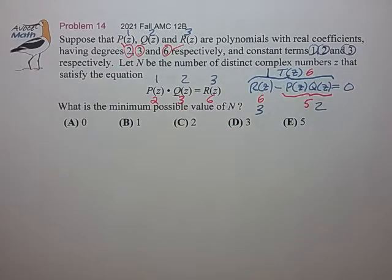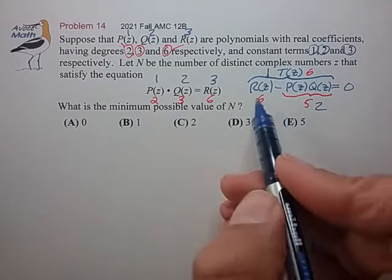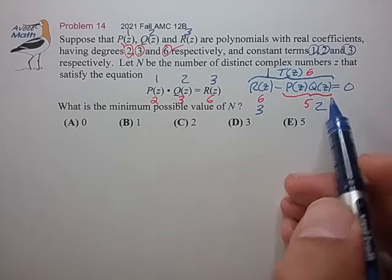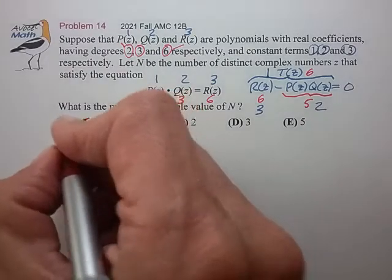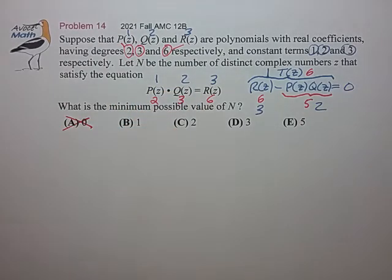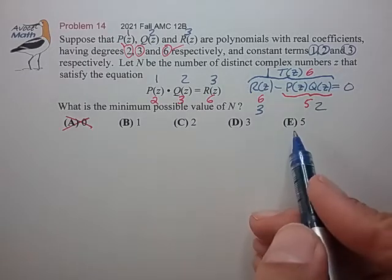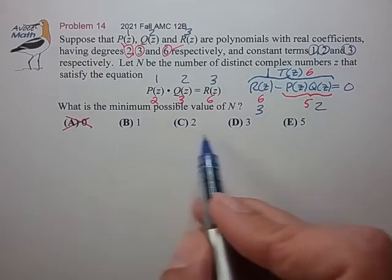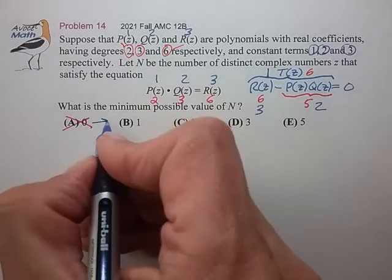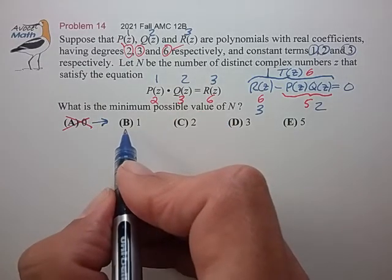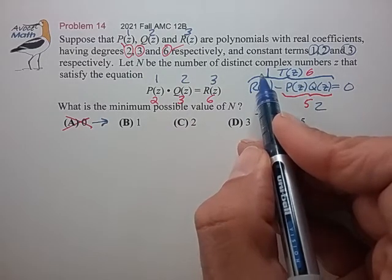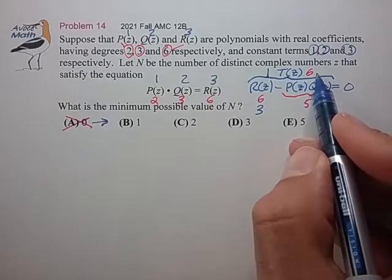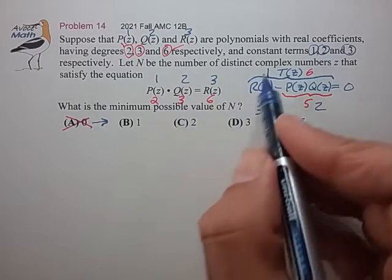All right, so we're going to try to figure out what's the minimum number of distinct complex numbers that satisfy this equation. Now, since this is a six-order equation, I know that it has to have at least one root. So I know that A can't be the correct answer, but it could be 1, 2, 3, or 5. So let me try to work through this from the left side and see, can I form a polynomial T(z) that has a constant term of 1, a degree of 6, that has only one distinct complex root?